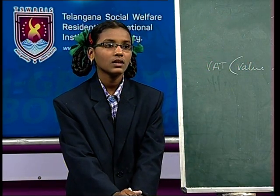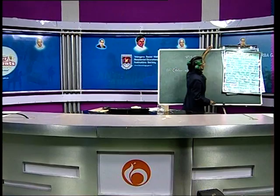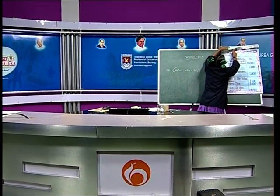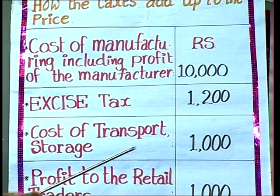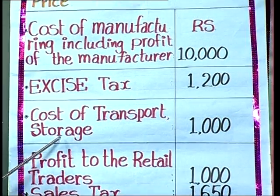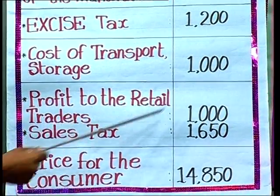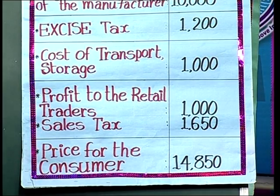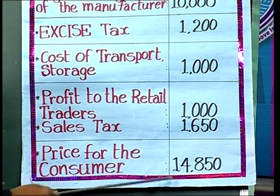For example, the cost of manufacturing a TV is 10,000 rupees. The company paid excise duty of 1,200 rupees. After manufacturing this TV, it is transported from one place to another. The cost of transport and storage is 1,000 rupees, and profit to the retail traders is 1,000 rupees. Finally, the consumer gets this product at a price of 14,850 rupees. Are you understanding it, Swara?